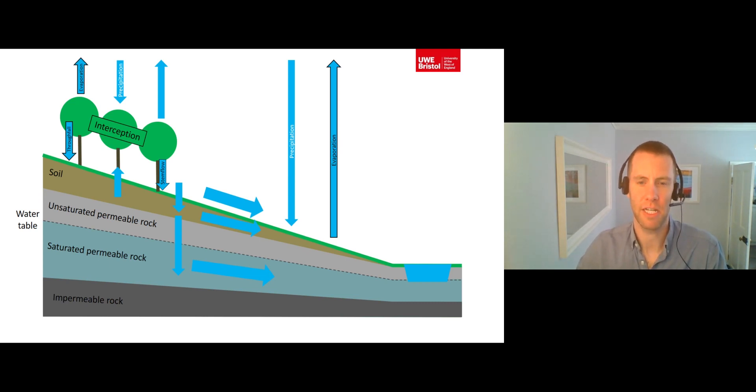As well as slowing down the rate at which precipitation reaches the hill slope surface, interception also allows time for some water to be lost back into the atmosphere via evaporation.